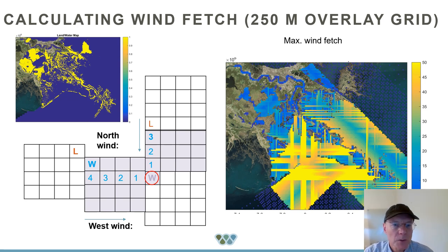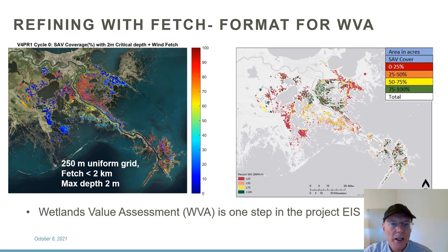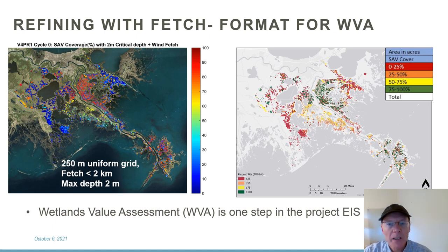Here you can see the approach taken to calculate fetch. There's a uniform 250-metre grid overlay calculating the distance in four cardinal directions of wind fetch, where the critical fetch distance is two kilometres. That was then applied to clip the data, and the data was reformatted into broad categories used within the environmental impact process.